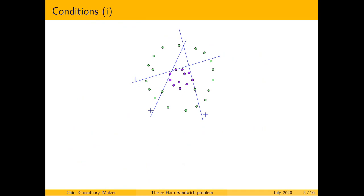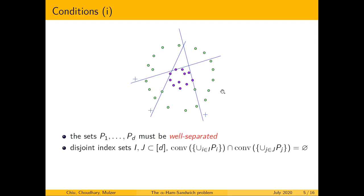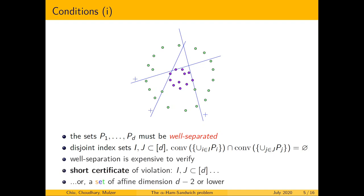We will only be interested in colorful hyperplanes or colorful sets as solutions, because it is easy to define orientation for such sets. The conditions required for the theorem to hold require the point sets to be well separated: if we take a subset of the colors, the points from those colors must be strictly separated from points of the rest of the colors. This is expensive to verify; however, there is a short certificate of violation — an index set of two sets of colors such that the corresponding convex hulls are not strictly separated. Equivalently, a colorful set of affine dimension d minus 2 or lower also serves as a certificate that well separation does not hold.